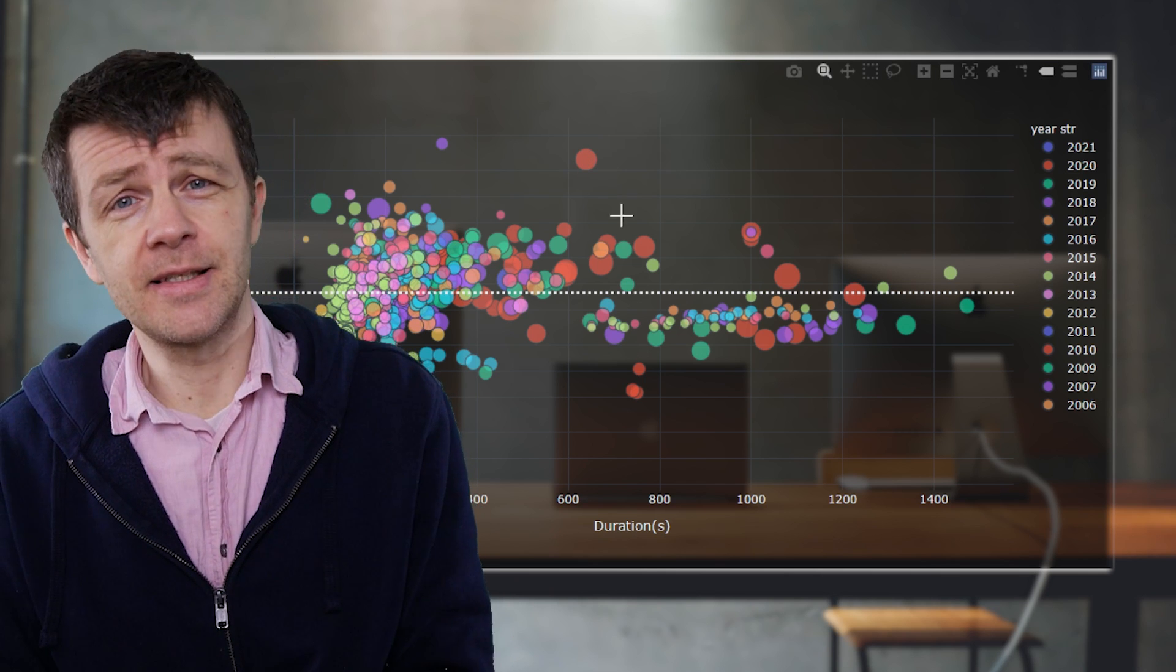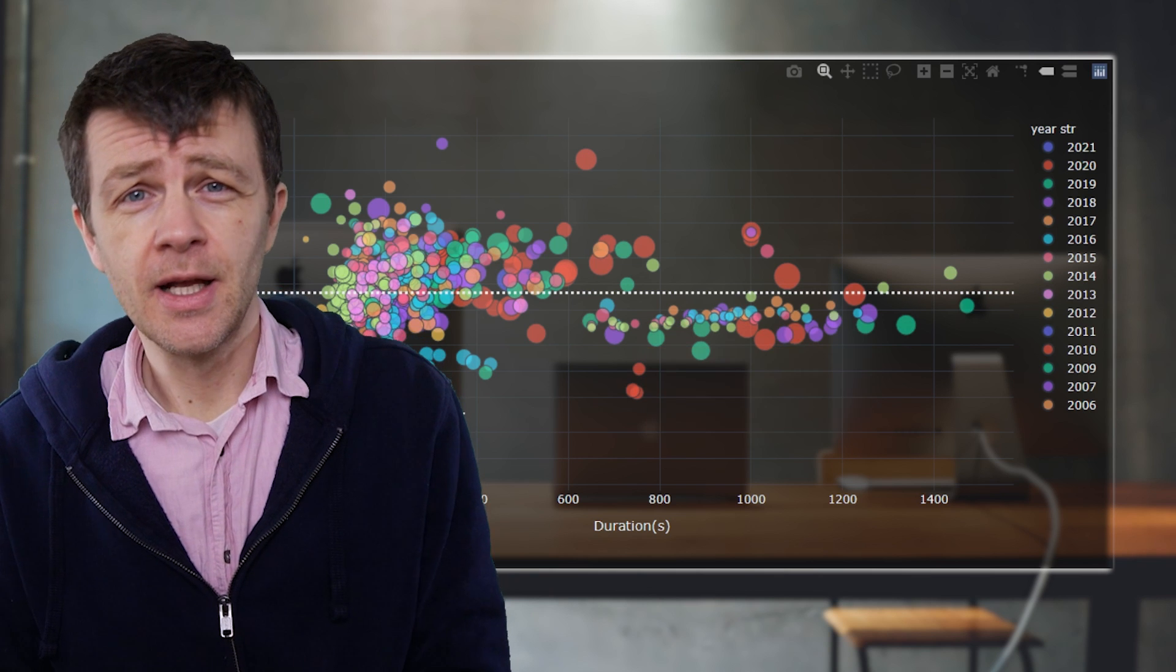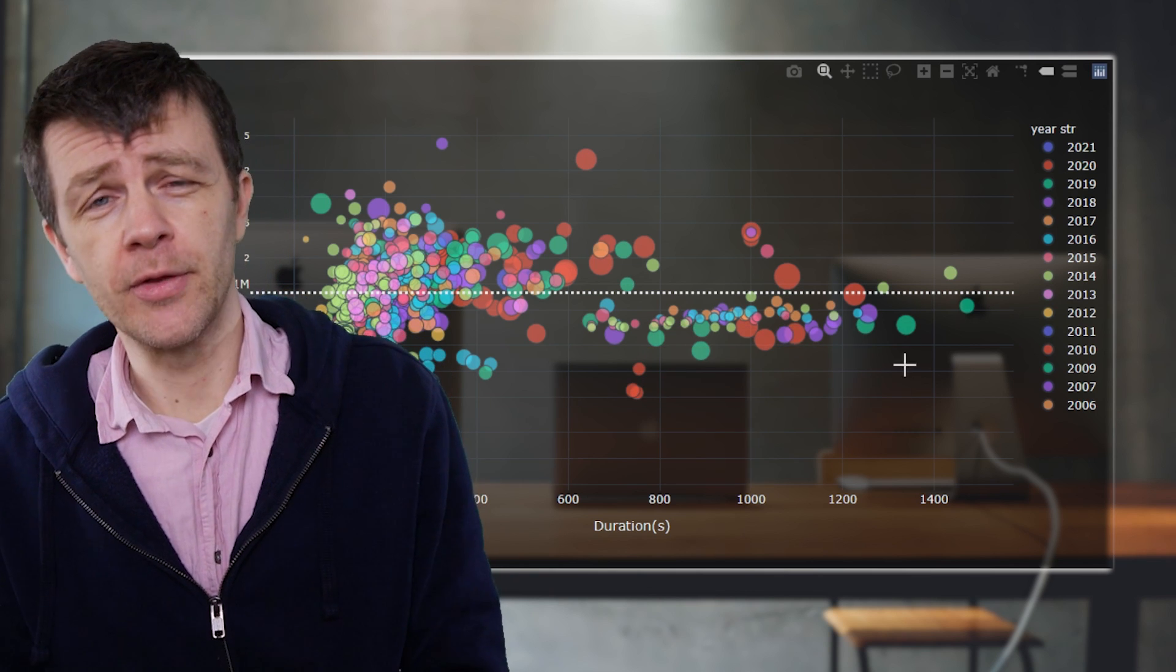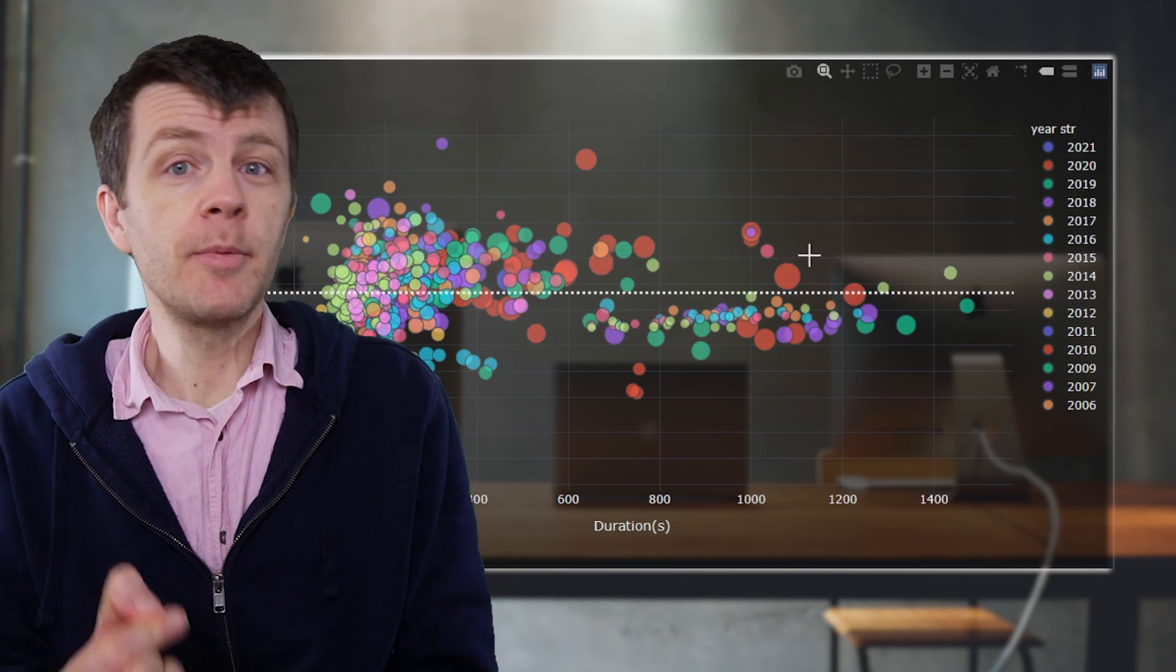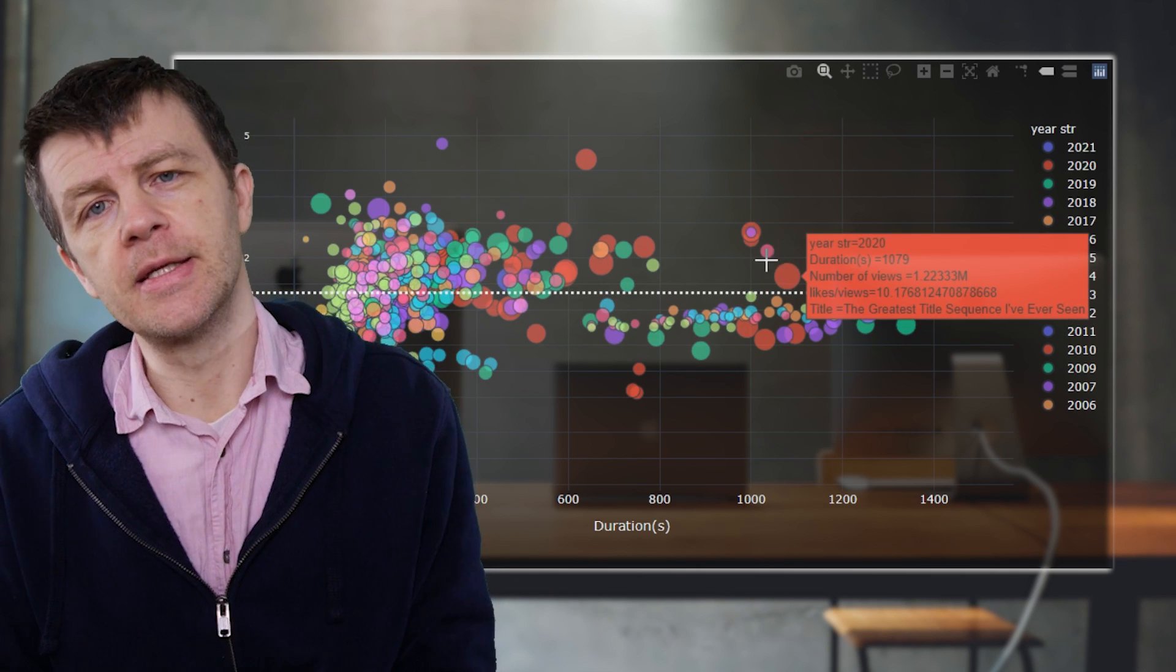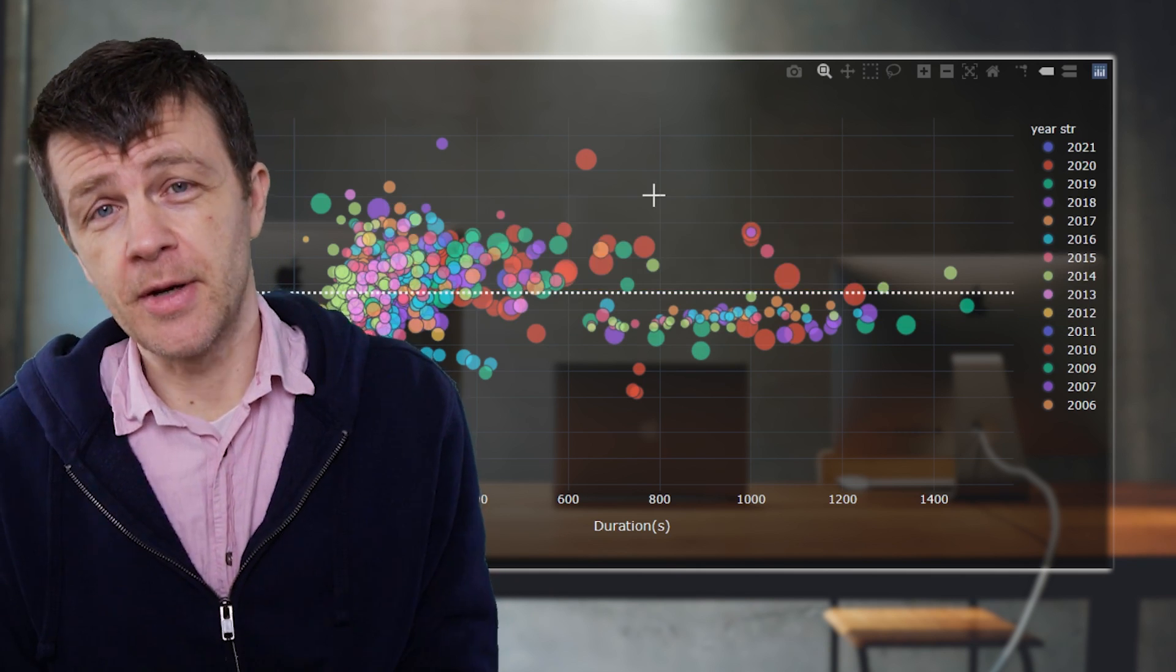Along the x-axis is duration, so the further to the right a marker appears, the longer the video. The y-axis is the number of views. So the higher up a marker appears, the more views that video has attracted.